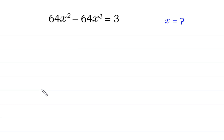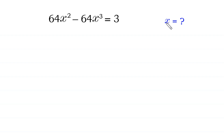Hello, welcome to how to solve this very nice cubic equation. 64x² minus 64x³ is equal to 3. We need to find all possible values of x.